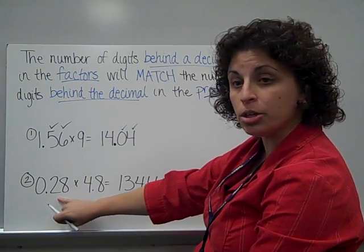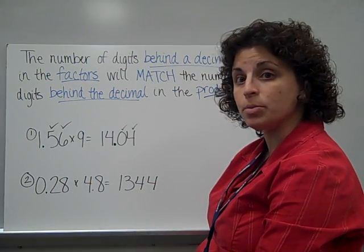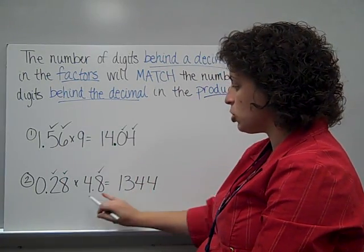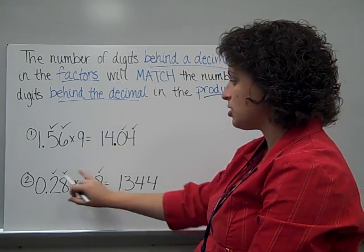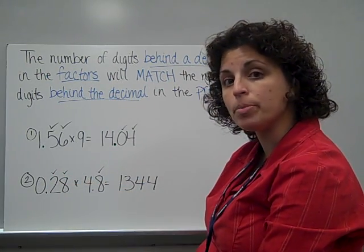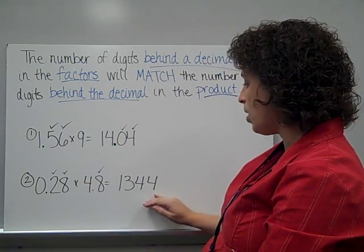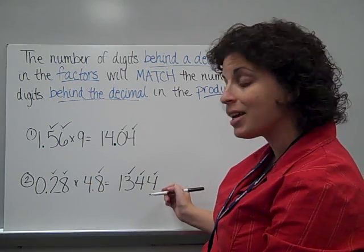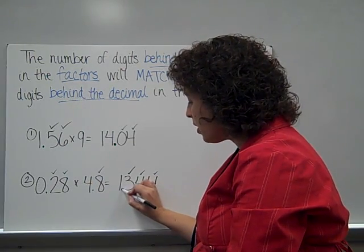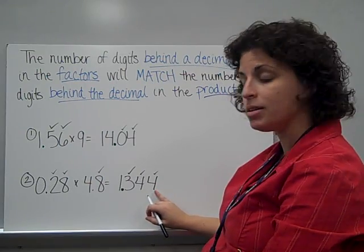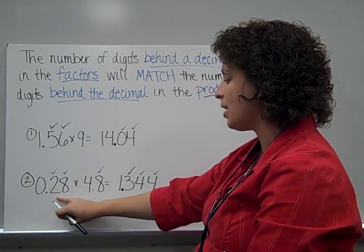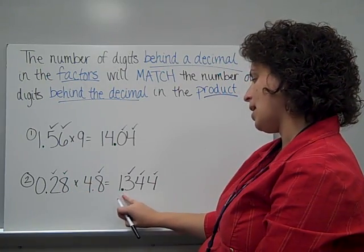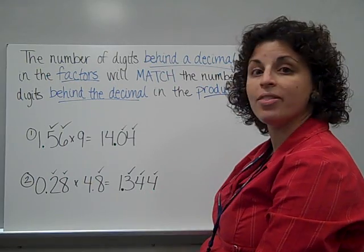In problem number two, both of these factors have decimals. I've got two digits behind a decimal here, and one more digit behind a decimal here, so that's a total of three digits that are going to have to be behind the decimal in my product. Starting at the back: one, two, three have to be behind a decimal. So, my decimal comes right in front of the three, so one, two, three are behind it. That tells me that zero and twenty-eight hundredths times four and eight-tenths is equal to one and three hundred forty-four thousandths.